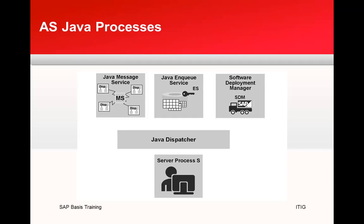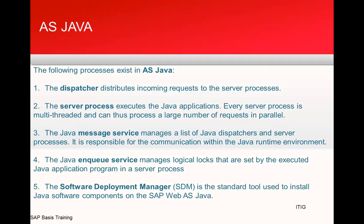Now let's look at the Java processes. On the Java side you have a Java message service, an enqueue service, SDM — the SAP Software Deployment Manager — and a Java dispatcher which distributes requests. At the bottom are the server processes.